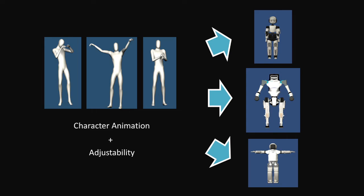In this research, we propose a humanoid robot motion generation approach based on the procedural animation IK rig method. By applying this method, we can create motions that follow the character animation with adjustability to different humanoid robots.